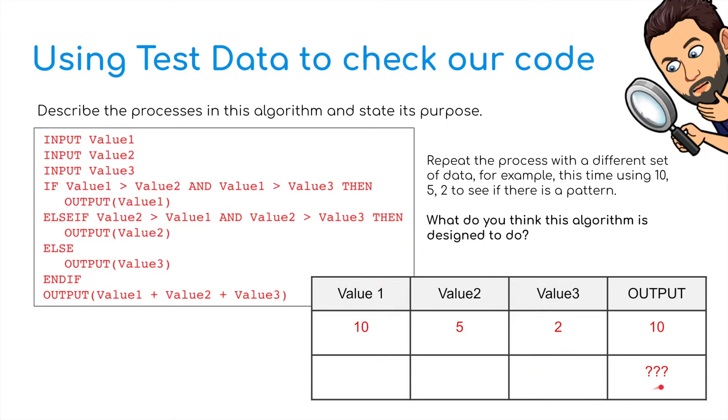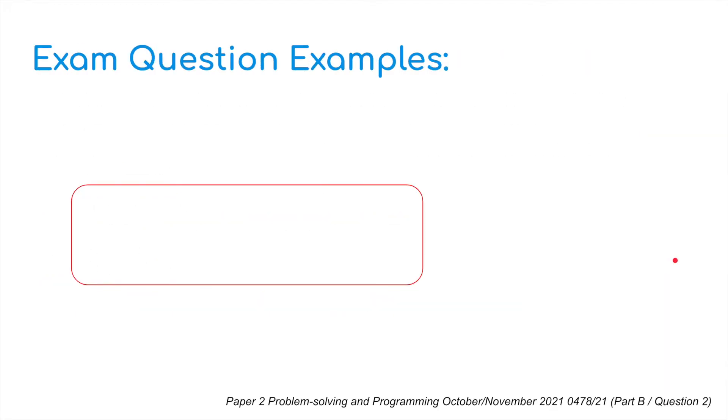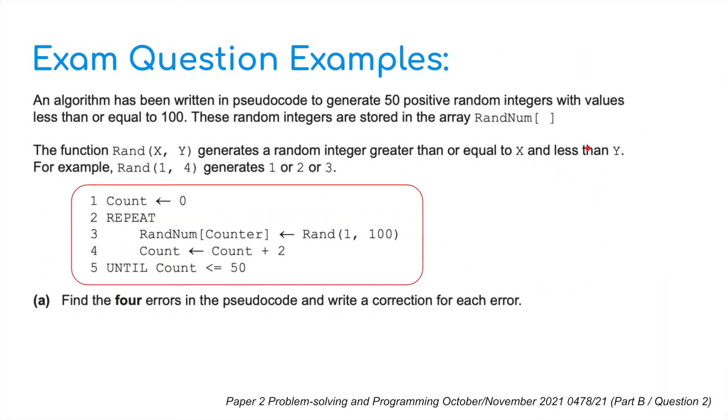And then finally it should output value 1 plus value 2 plus value 3. So it should output 17, which it has done. I'm then going to move on to some exam questions, which I want you to have a little look at. We're going to look back at some past papers from previous years and see if we can determine what is wrong with the code and how we can change it.